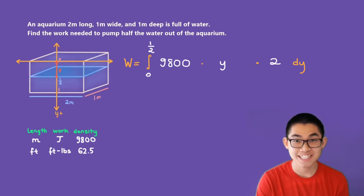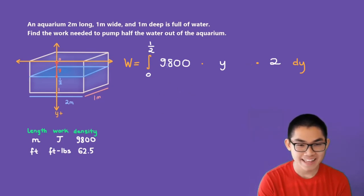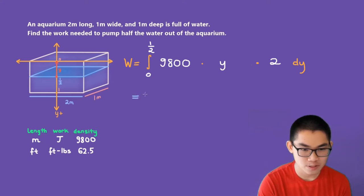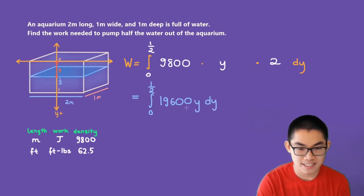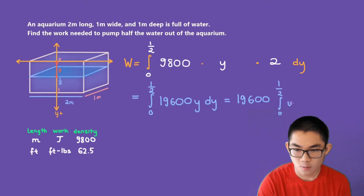Let's evaluate this integral. 9,800 times 2 will give you 19,600. So the work is equal to the integral from 0 to 1 over 2 of 19,600 times y times dy. Since this is a constant, we can move it outside of the integral. So we get 19,600 times the integral from 0 to 1 over 2 of y dy.